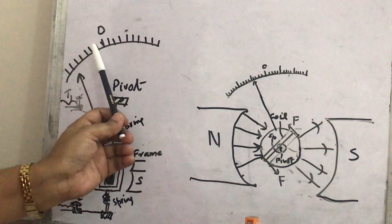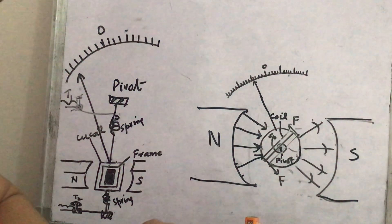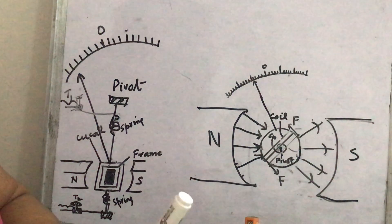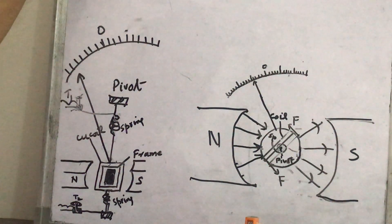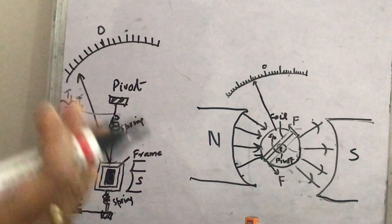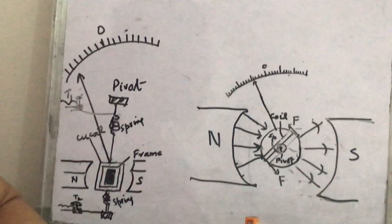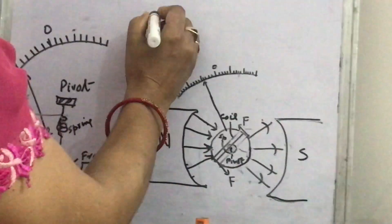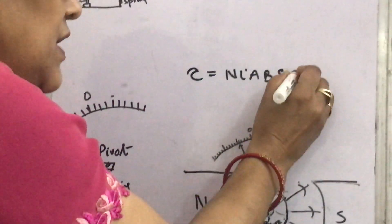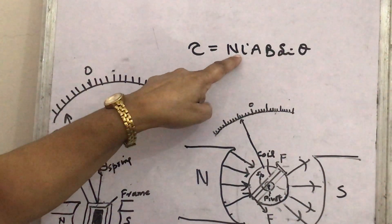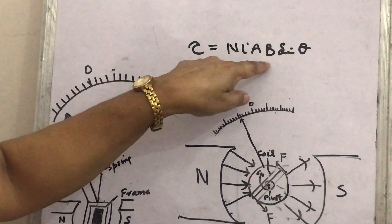Whenever a current-carrying coil is placed in the magnetic field — as in both figures — a deflecting torque is produced. That torque is given by the relation: torque equals nIAB sinθ, where n is the number of turns, I is the current in the coil, A is the area vector at the plane of the coil, B is the magnetic field, and θ is the angle between the area vector and the magnetic field.